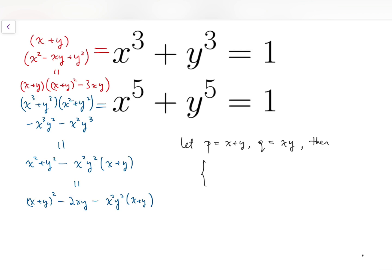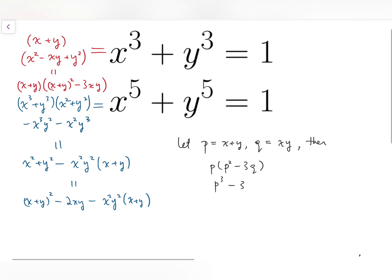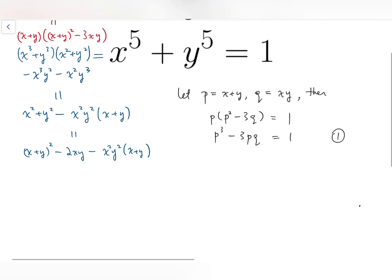Then the first equation becomes p times p squared minus 3q or I'm going to rewrite that as p cubed minus 3pq equals 1. That's the first equation. While for the second equation, it's going to become p squared minus 2q minus q squared times p, and that equals 1 as well. And then we're going to solve these two equations as a system.